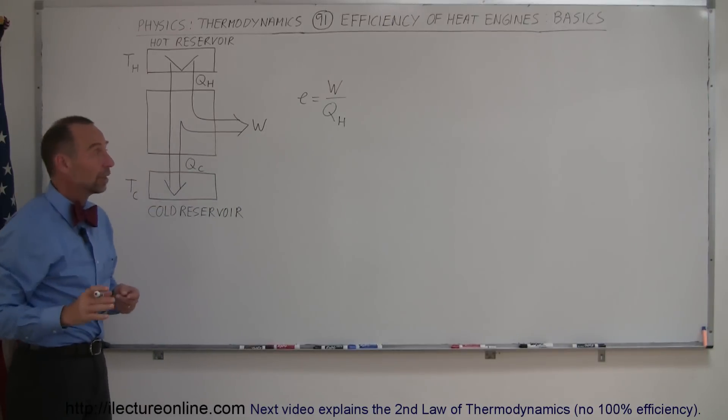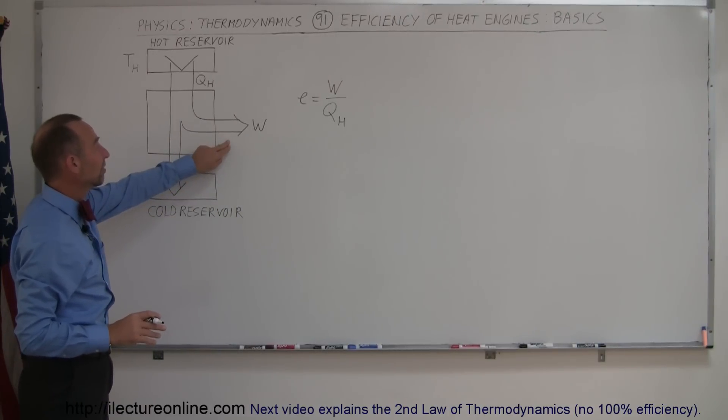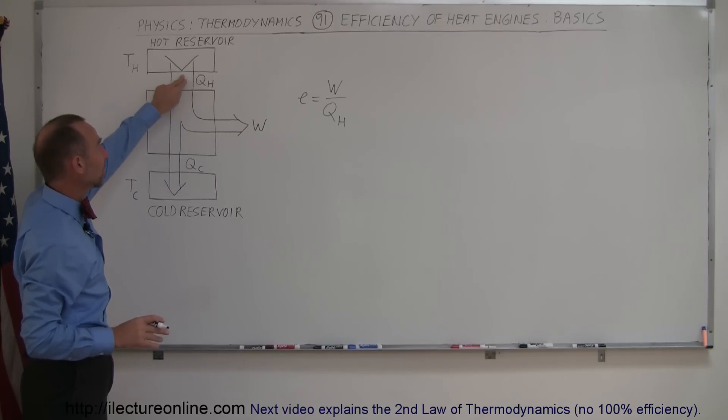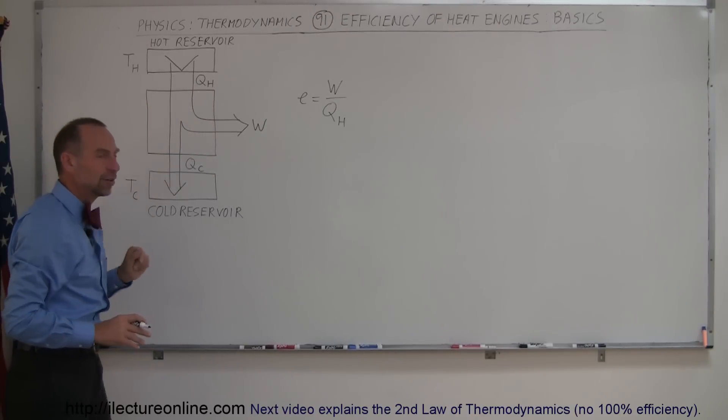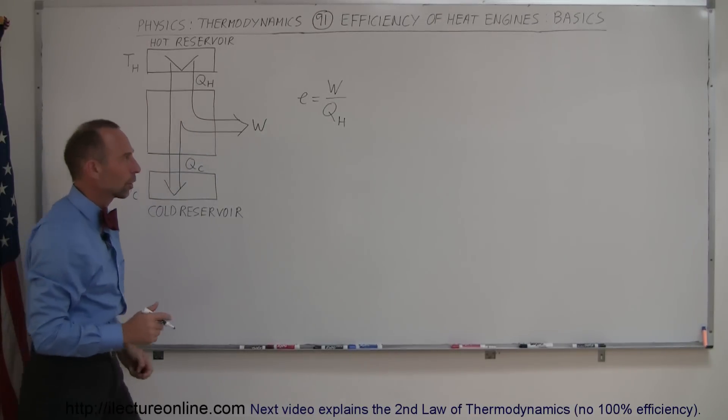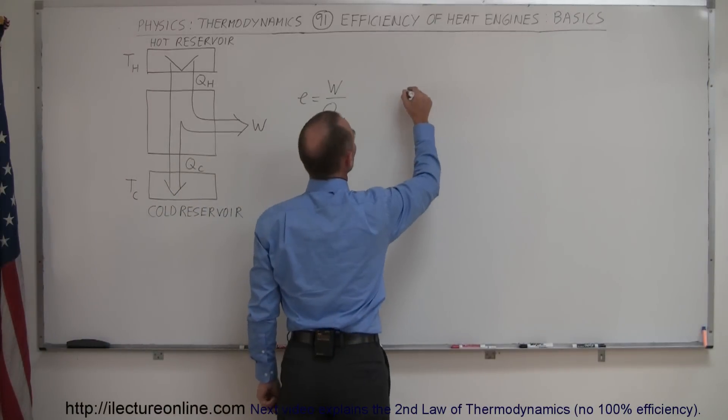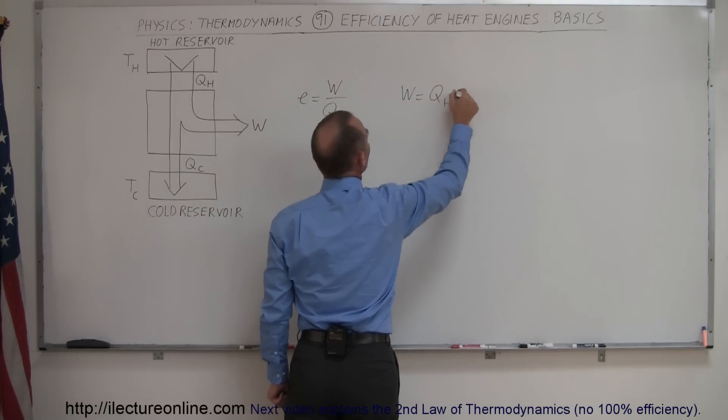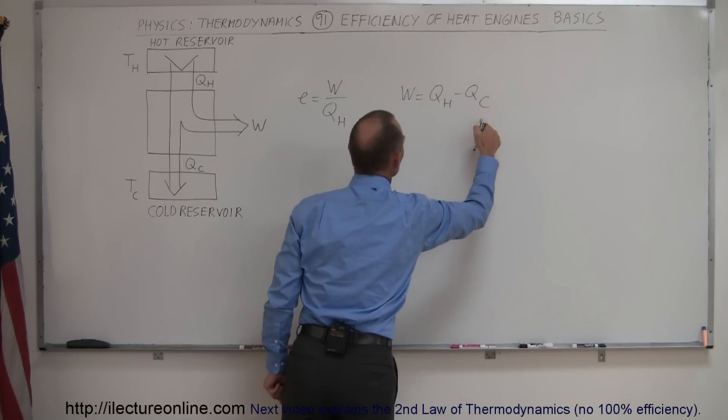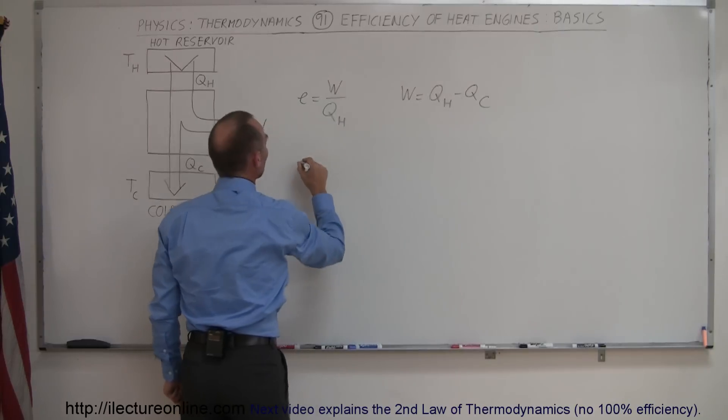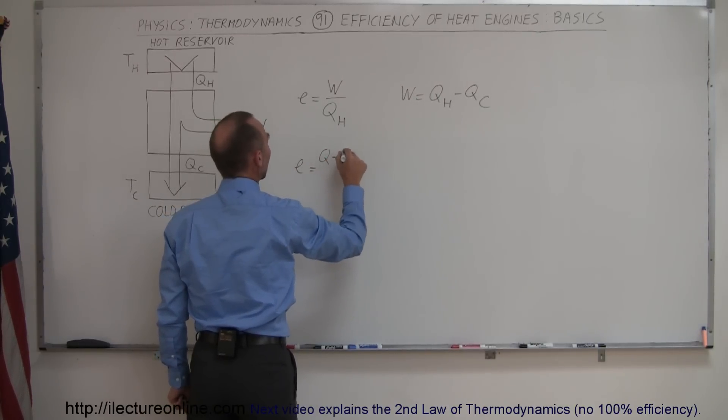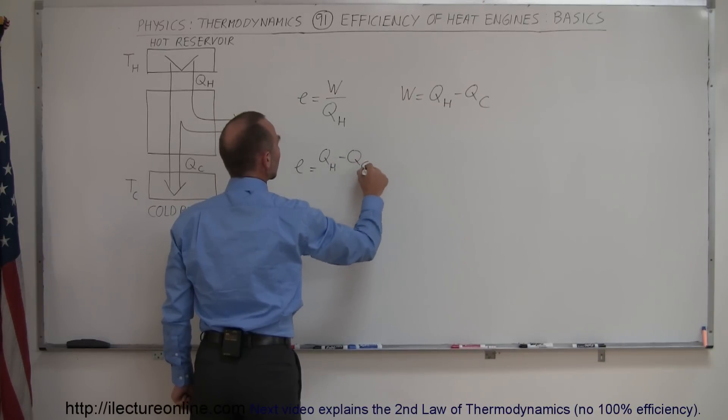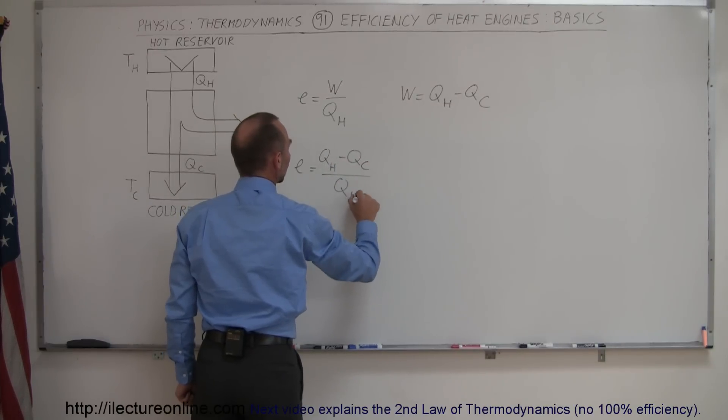Now, also, you can realize here that the amount of work that you do is simply the difference between how much heat you get from the hot reservoir and how much heat is expelled and not used to do work. So, if we then use the equation that the work done is equal to Qh minus Qc, simply the difference, and we replace that in here, we can also write the efficiency of an engine equal to the difference between Qh and Qc, let me write it like that, divided by the original Qh.